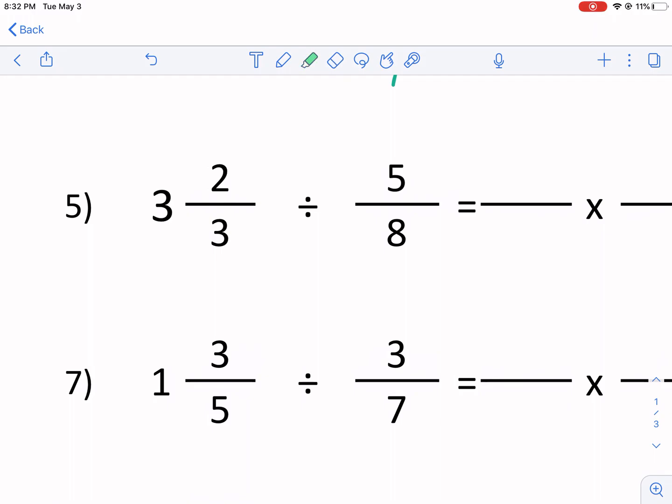So number five, keep, change, flip. That's one thing. But we also have a mixed fraction in here. First thing we're going to do is multiply it three times three and then add the top. That is 11. Three times three is nine plus two, 11. Over three.